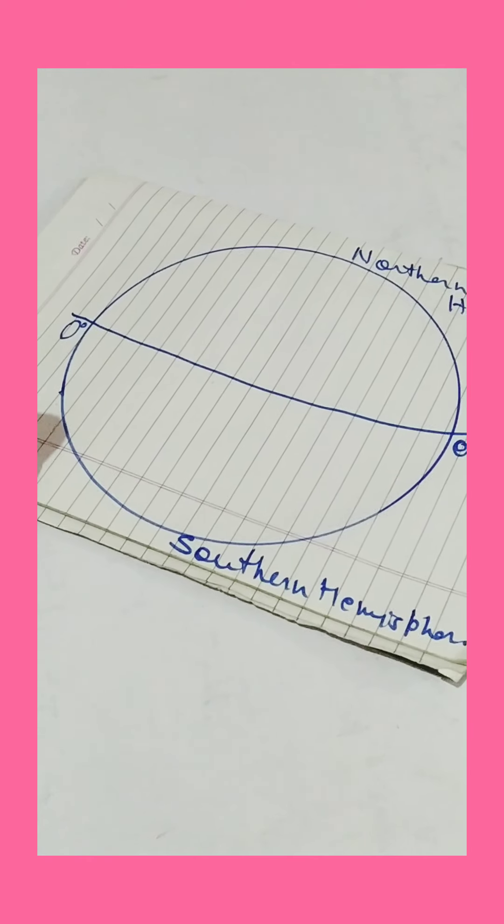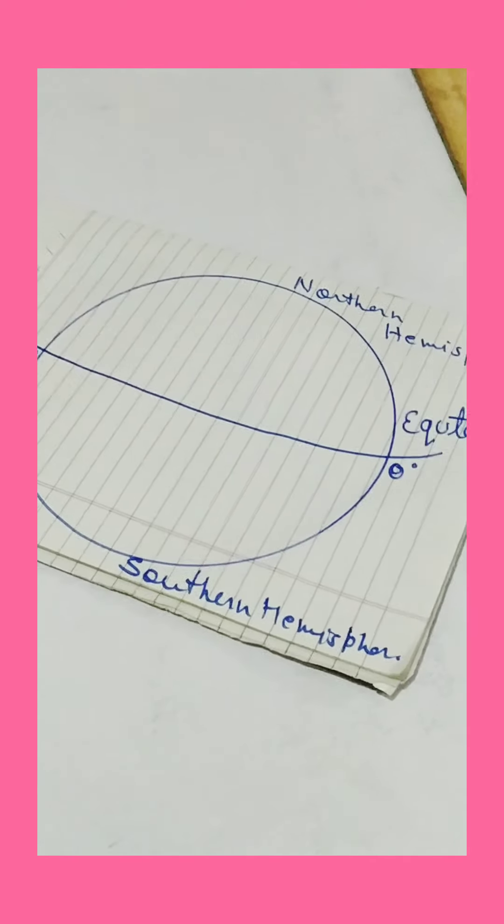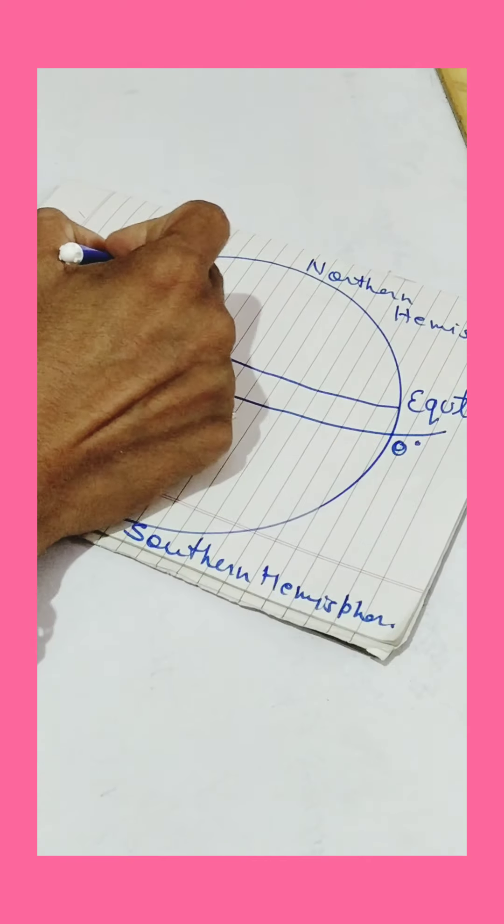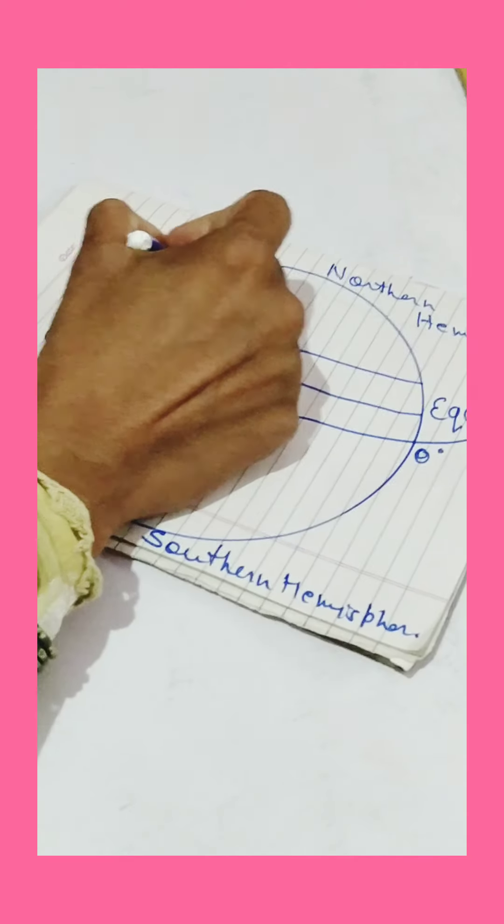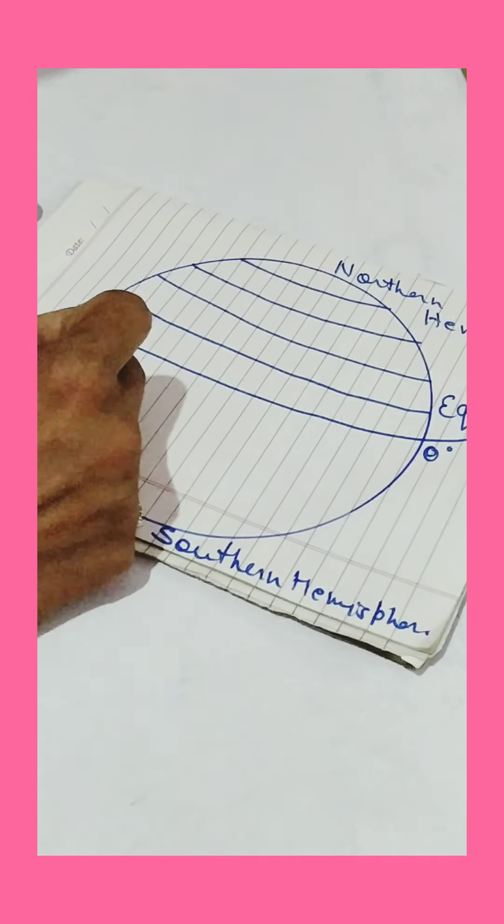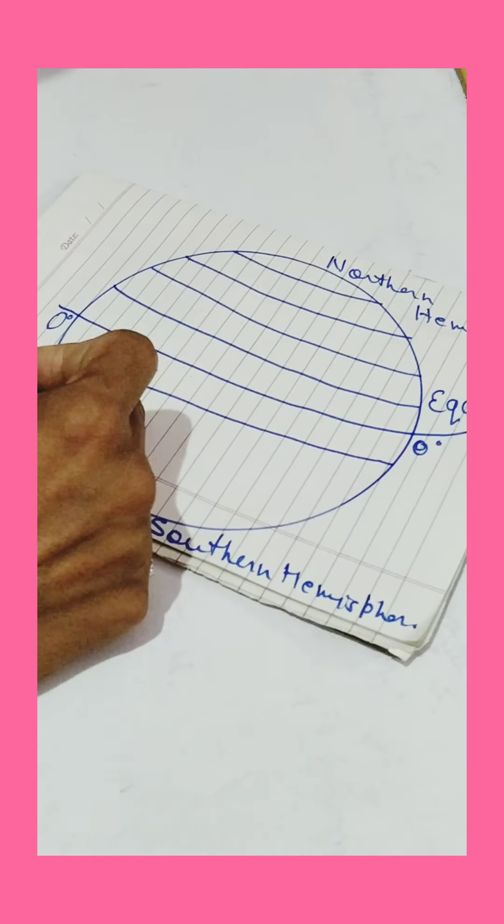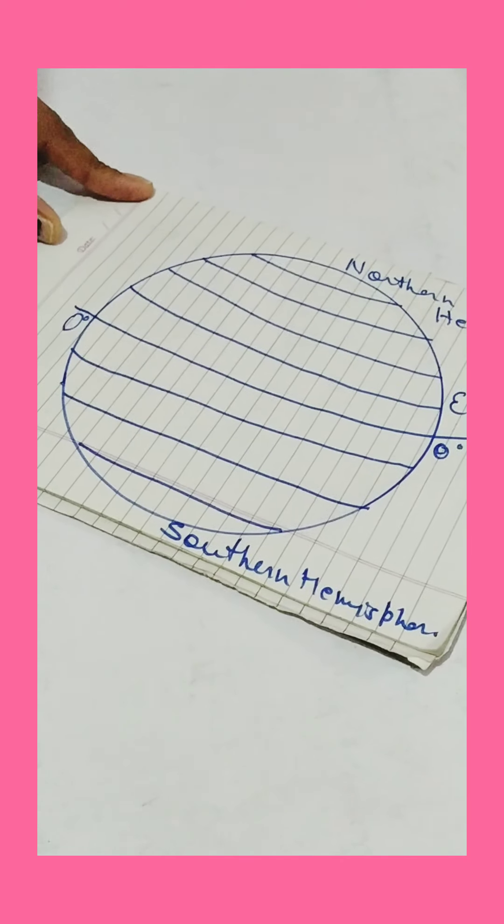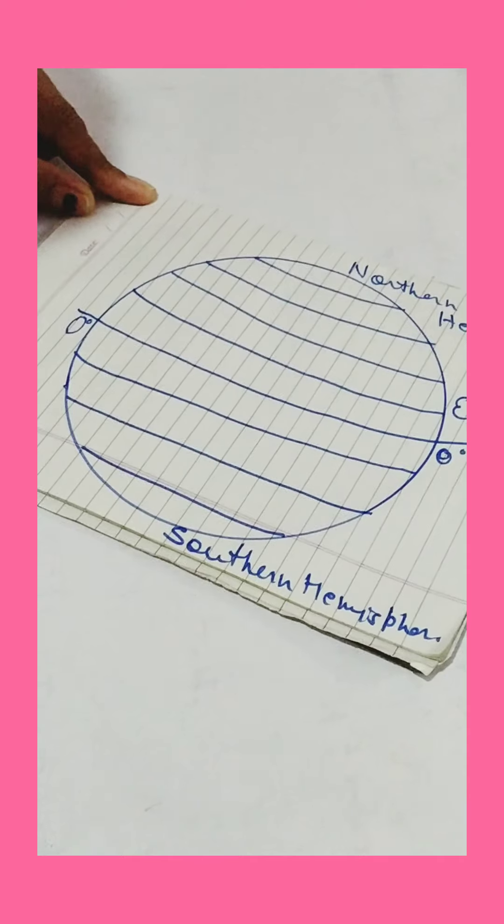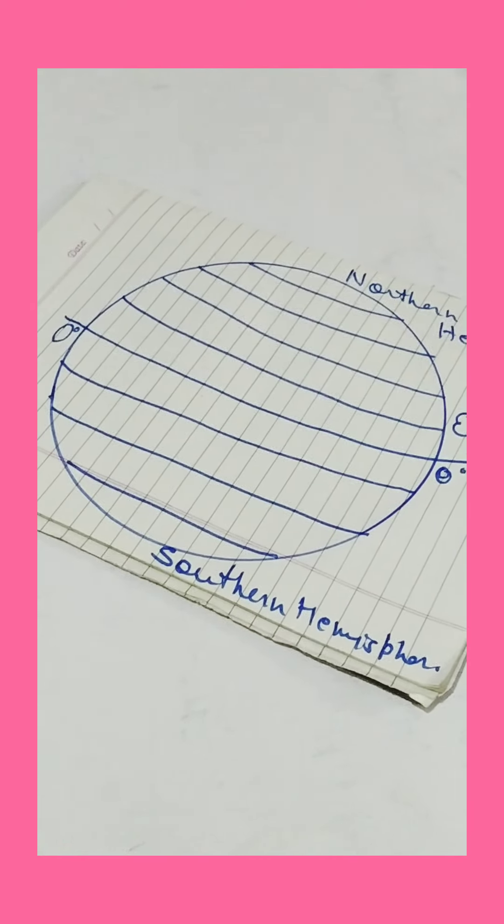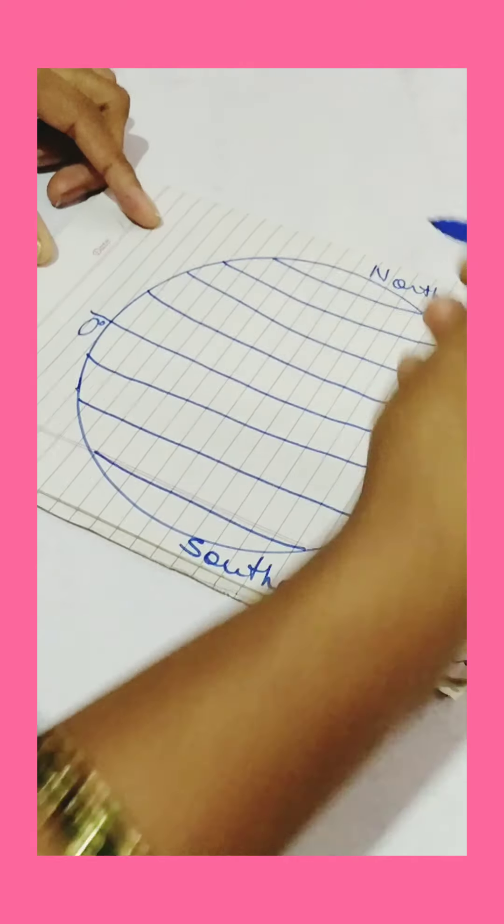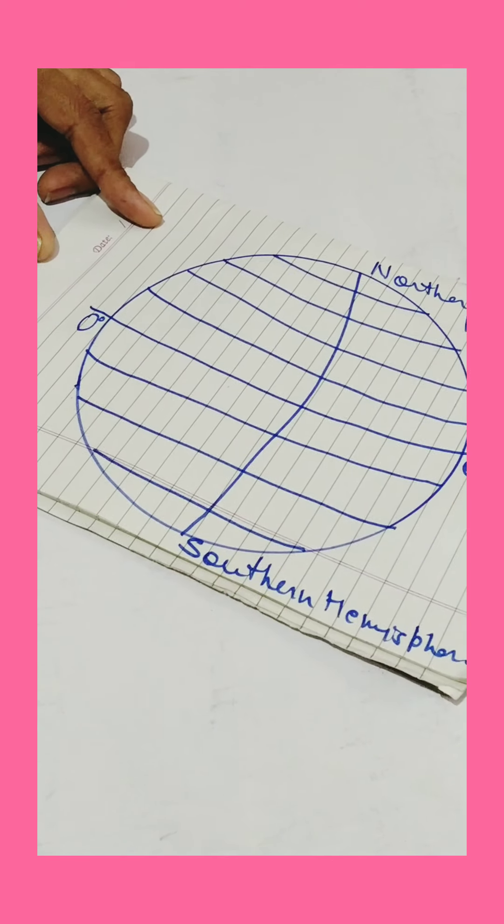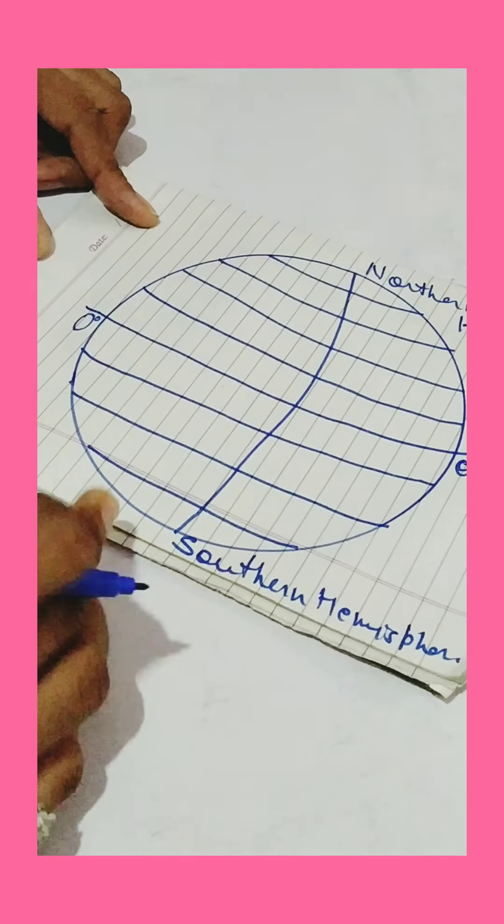And these are other latitudinal lines that divide the earth into many parts like this. These horizontal lines are known as latitudinal lines. Now, there are other vertical lines. This is prime meridian at 0 degree.